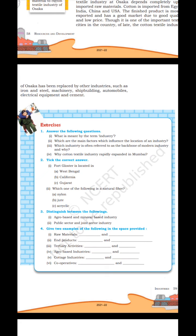Exercises — Answer the following questions: What is meant by the term industry? Which are the main factors that influence the location of an industry? Which industry is often referred to as the backbone of modern industry and why? Why did the cotton textile industry rapidly expand in Mumbai? Choose the correct answer: Hugli cluster is located in West Bengal / California / Gujarat. Which one of the following is a natural fibre: Nylon, Jute or Acrylic? Distinguish between agro-based and mineral-based industry. Give two examples of: raw materials and end products, tertiary activities, agro-based industries, cottage industries and cooperatives.